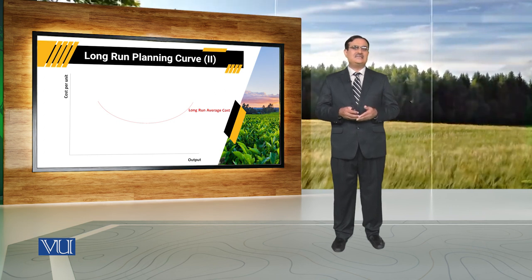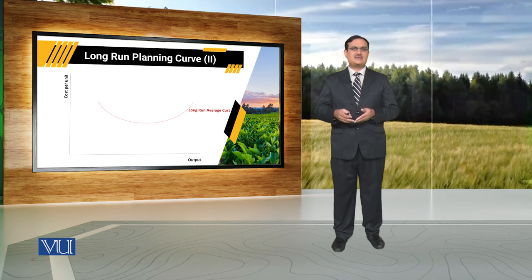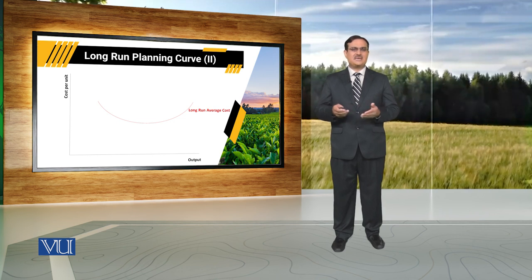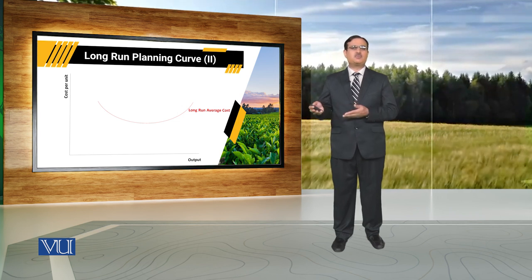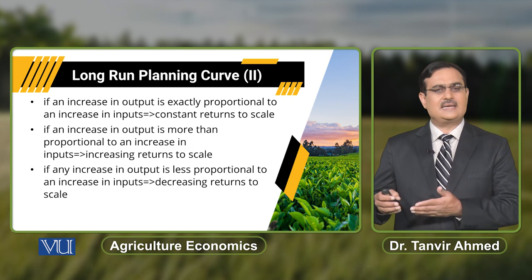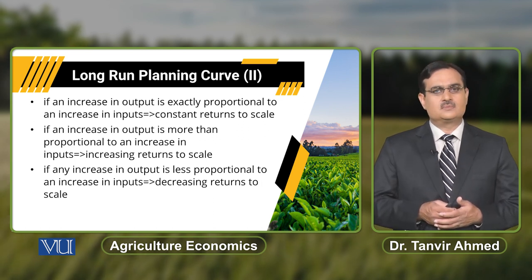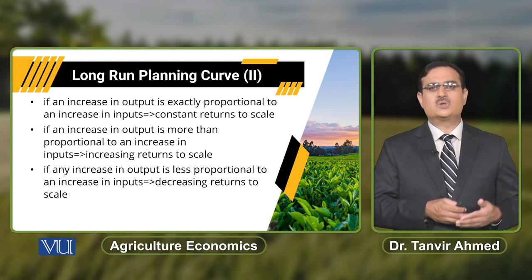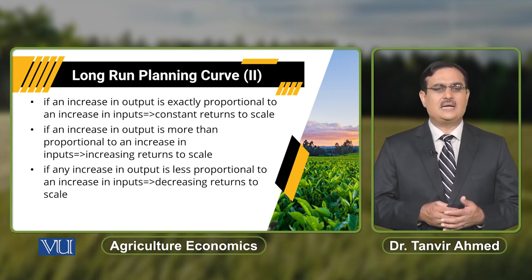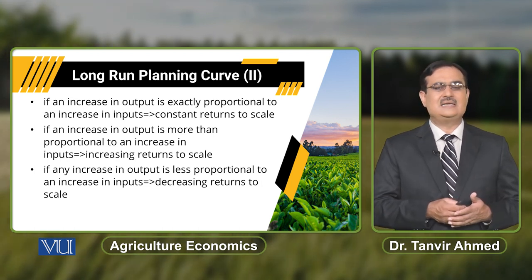Long run average cost decreases when farmer operates under increasing returns to scale, और यह जो long run average cost rise करना शुरू हो जाती है, यह होता है because of decreasing returns to scale. जब आप increasing returns to scale की बात करते हो — if increase in output is more than the proportional increase in input, जैसे अगर inputs हम 20% increase करें और output में more than 20% हो जाए — तो farmer is operating under increasing returns to scale. लेकिन decreasing returns to scale में proportional increase in inputs is greater than the proportional increase in output.